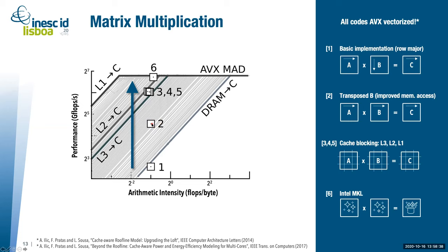To further improve performance, since we're still memory bound, we applied cache blocking for each of the cache levels. Each of those optimizations in points three, four, and five gave us improvements in performance. They are not so visible here because performance is on a log scale.